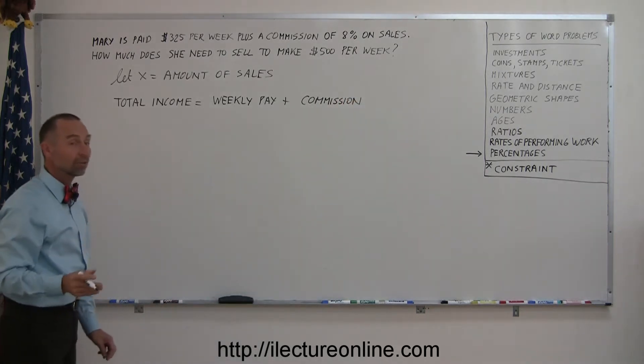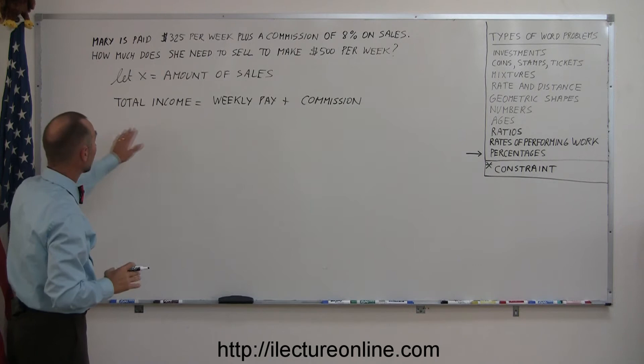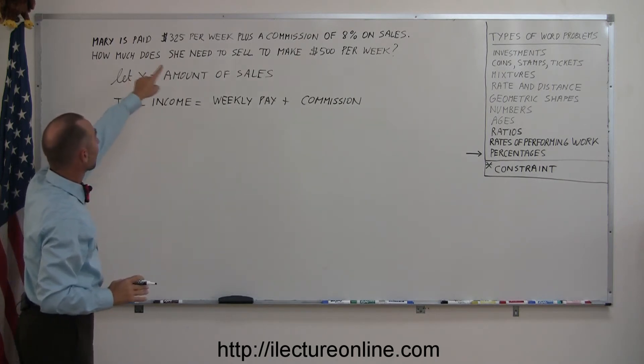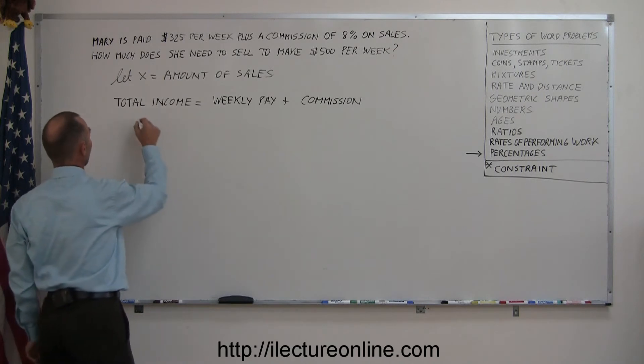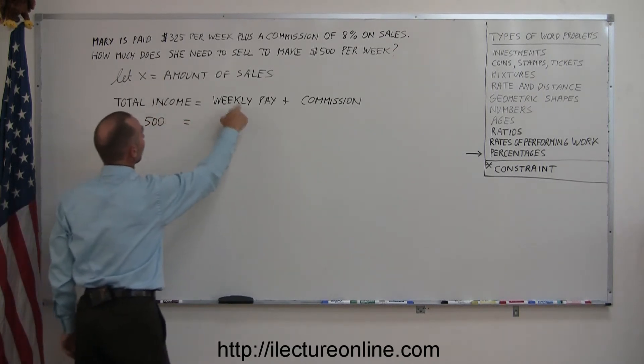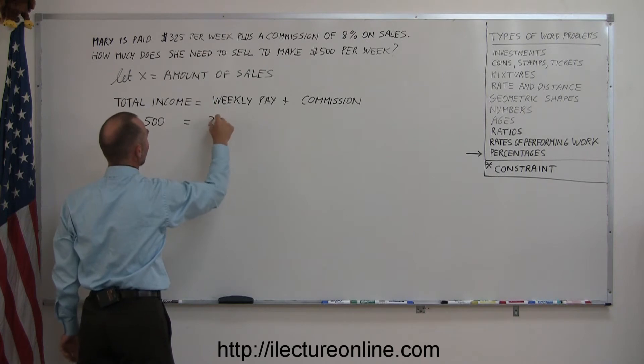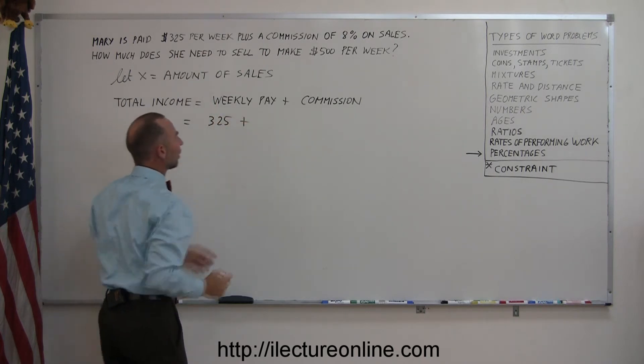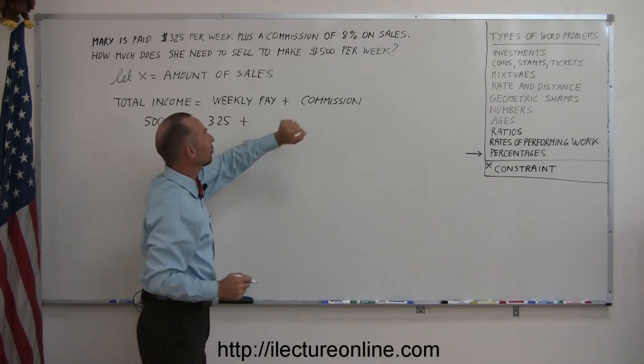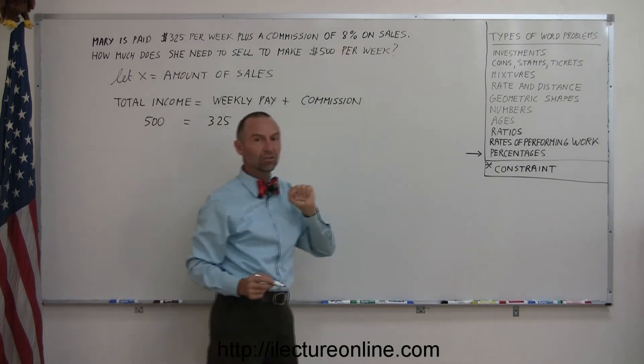Now let's write that in an equation translating the total income. That would be what she wants to earn. So $500 total income equals her weekly pay, straight pay of $325, plus the commission. And the commission, she earns 8% on everything she sells.